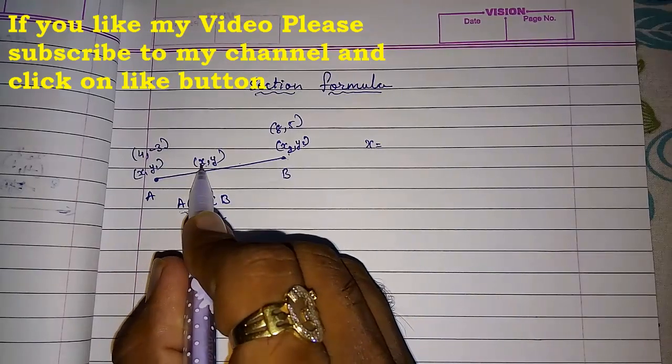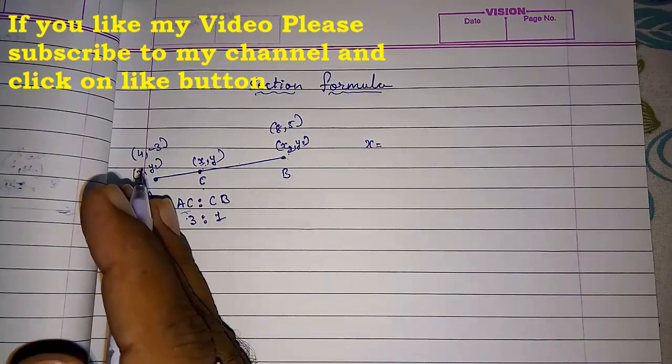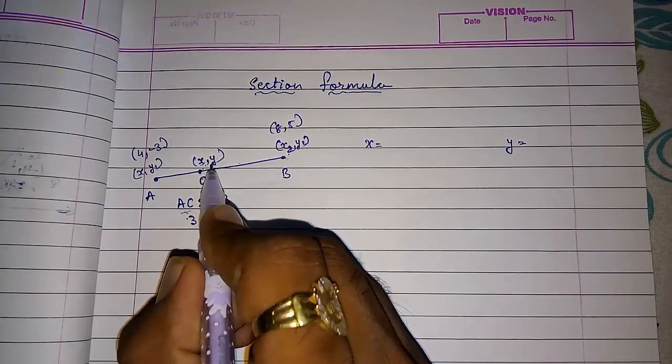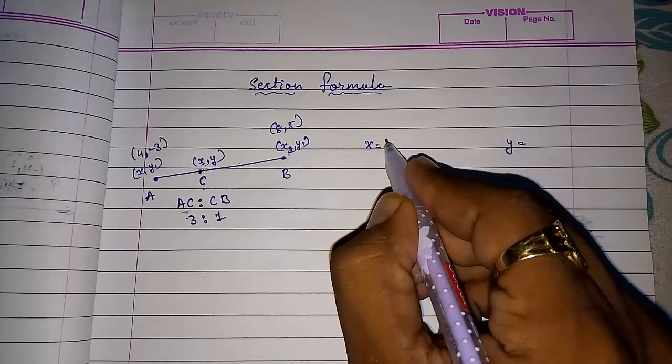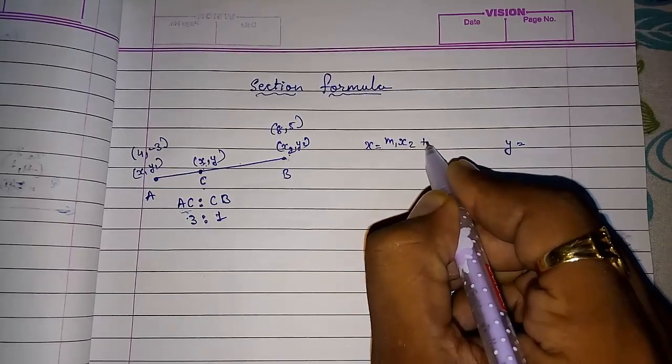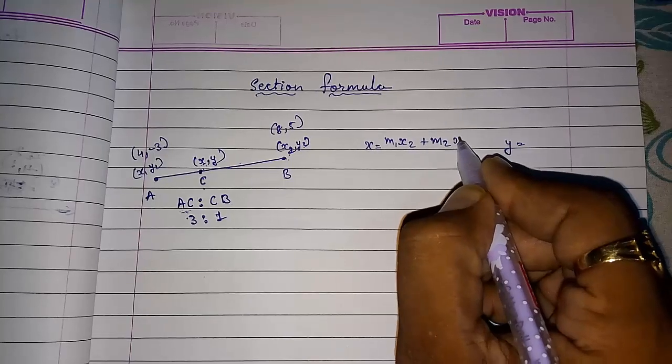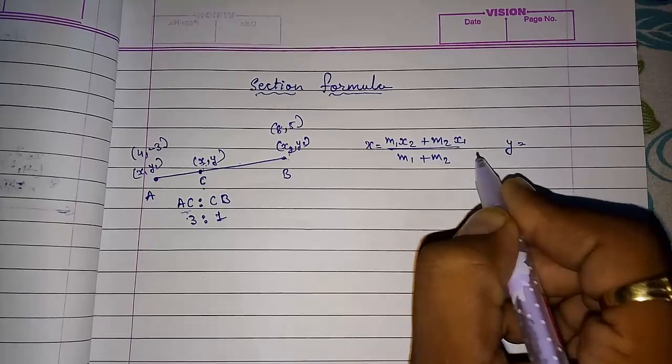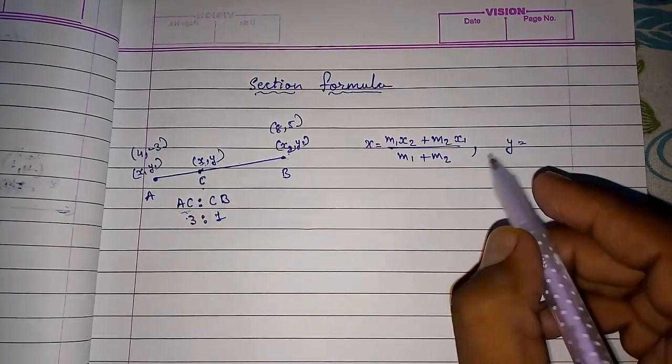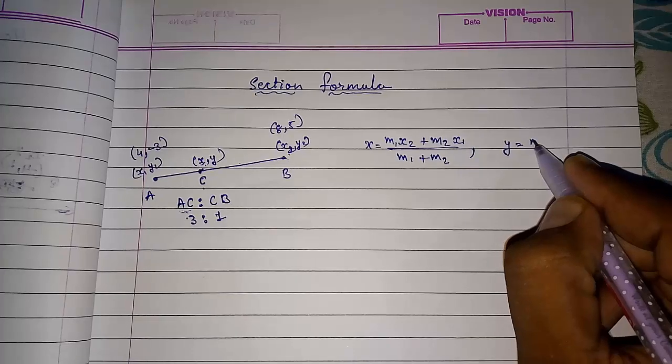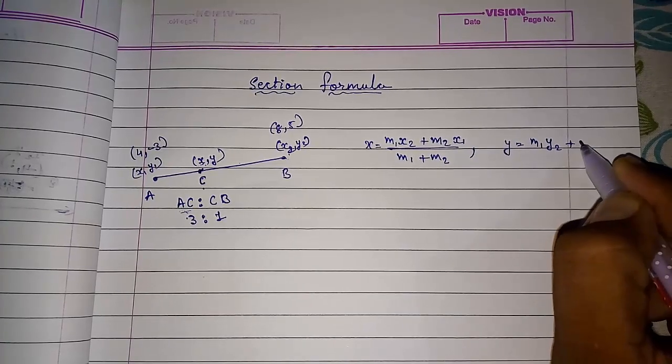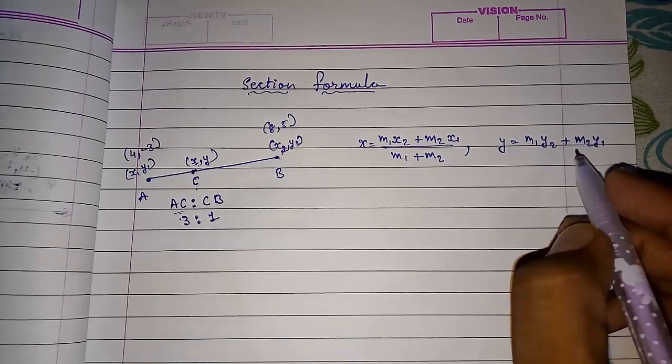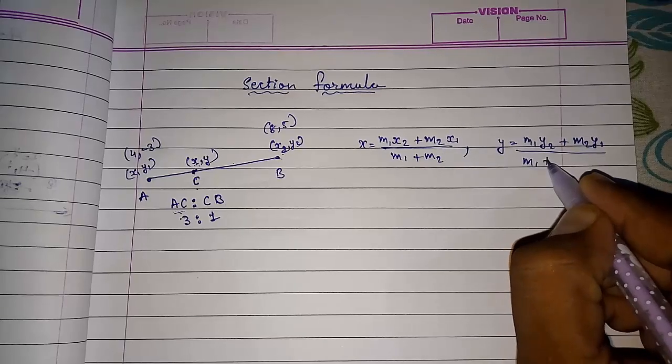Now I am going to tell you the section formula. Here X coordinate, the abscissa, we can find. X equals to M1 X2 plus M2 X1 by M1 plus M2. This way we will get abscissa of this coordinate. And Y equals M1 Y2 plus M2 Y1 by M1 plus M2.